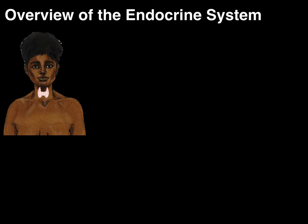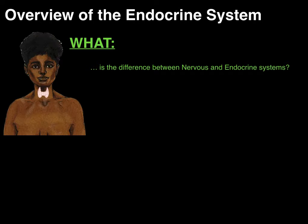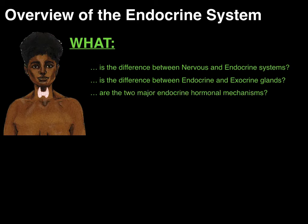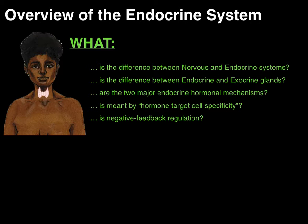Today I'm going to give an overview of the endocrine system and answer the 'what' questions: What is the difference between the nervous and endocrine systems? What is the difference between endocrine and exocrine glands? What are the two major endocrine hormonal mechanisms? What is meant by hormone target cell specificity? And what is negative feedback regulation?